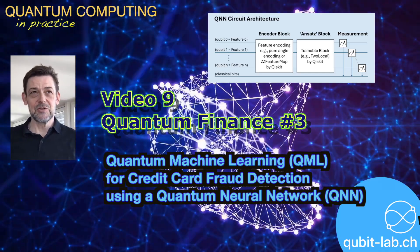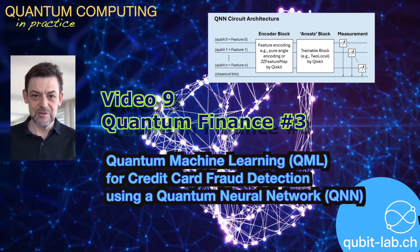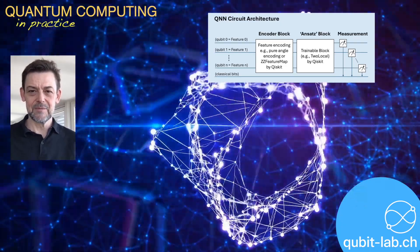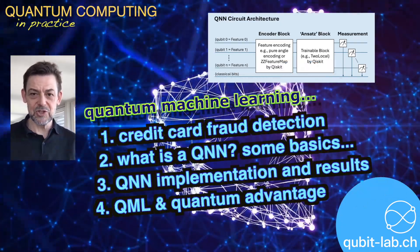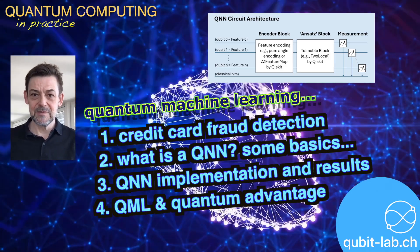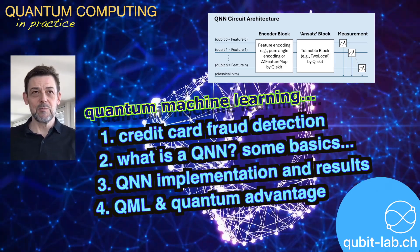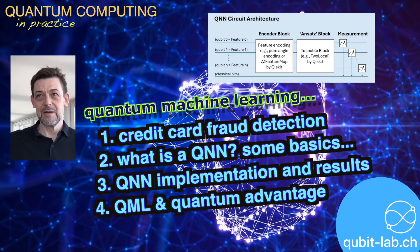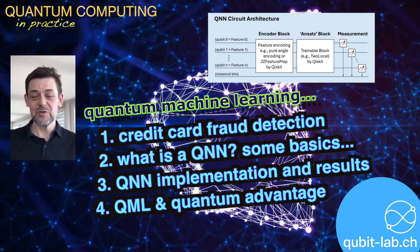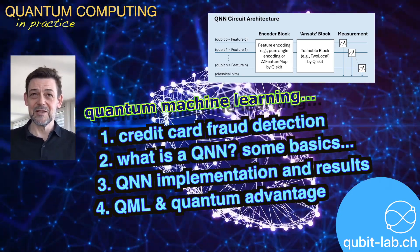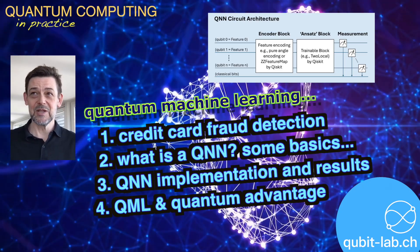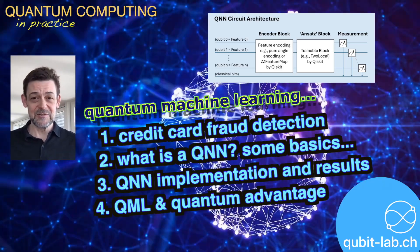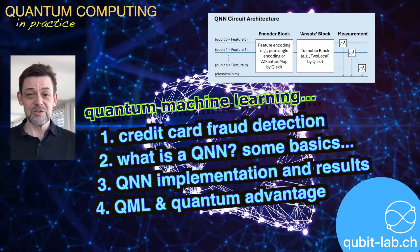The objective is to identify fraudulent transactions the moment they occur based on available features. First, we'll take a quick look at the general challenge of fraud detection. Then, we'll explore the basics of how a quantum neural network is structured and how it works. After that, we'll dive into a concrete Python use case and its results. Finally, we'll look at other QML applications and discuss the potential for quantum advantage in this field.